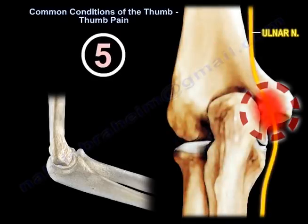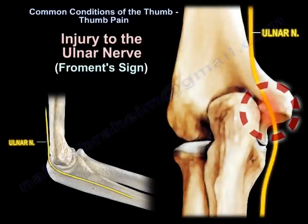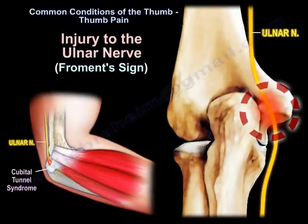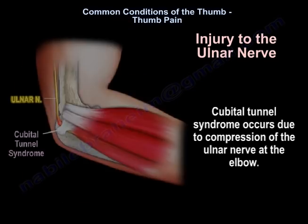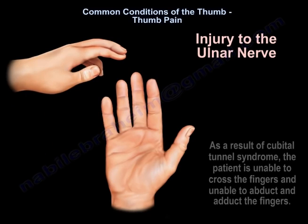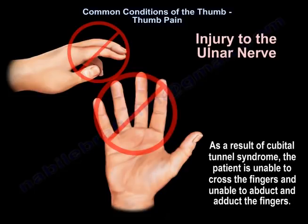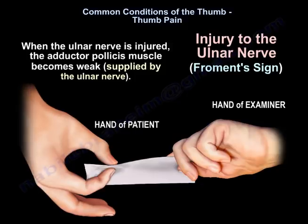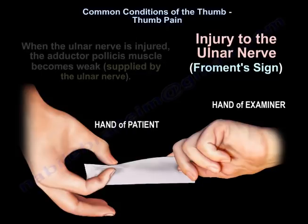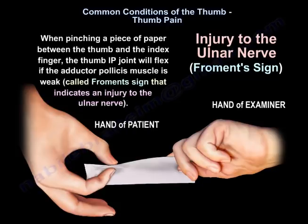Another condition is injury to the ulnar nerve, which can be diagnosed by a test called Froment's sign. Cubital tunnel syndrome occurs due to compression of the ulnar nerve at the elbow. As a result, the patient is unable to cross the fingers and unable to abduct or adduct the fingers. When the ulnar nerve is injured, the adductor pollicis muscle becomes weak. So when pinching a piece of paper between the thumb and index finger, the thumb IP joint will flex if the adductor pollicis muscle is weak — this is called Froment's sign, indicating an injury to the ulnar nerve.